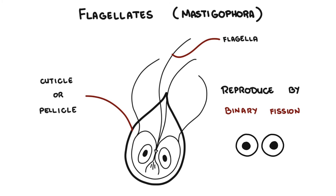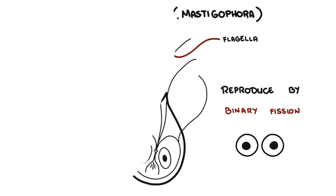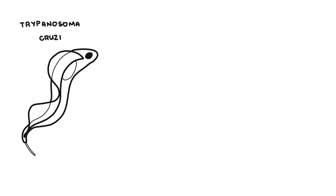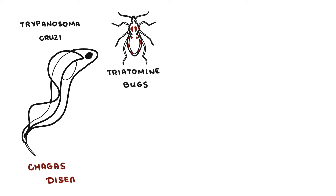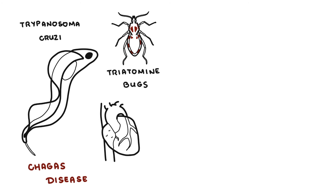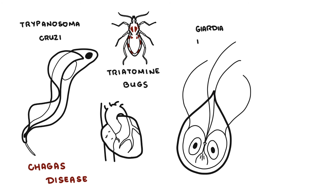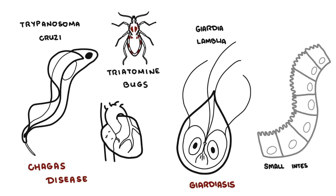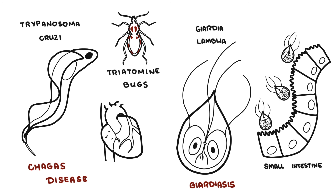Some examples of pathogenic flagellates include Trypanosoma cruzi, which is transmitted by triatomine bugs and causes Chagas disease, a condition characterized by heart and gastrointestinal lesions in the chronic phase. Giardia lamblia causes Giardiasis — the cysts are ingested from contaminated water, food, or fomites and travel to the small intestine where they become trophozoites, attach to the intestinal wall, and cause watery diarrhea.